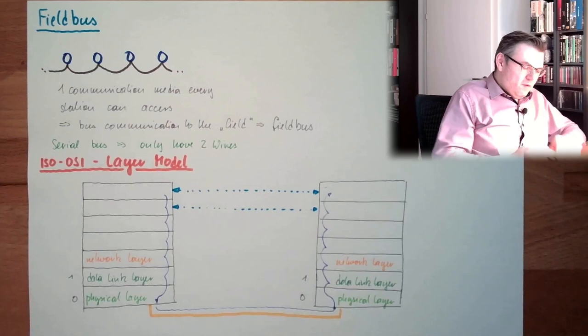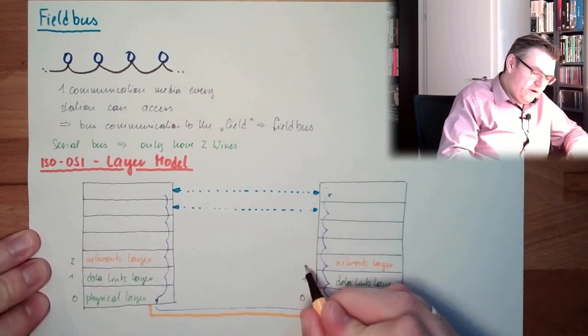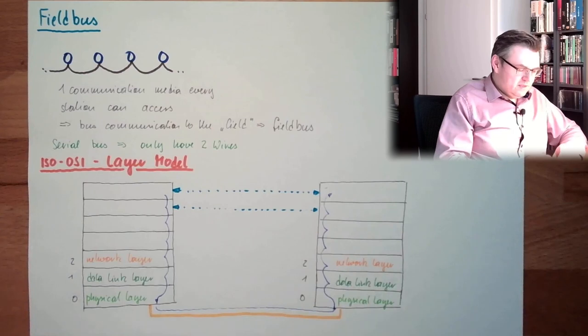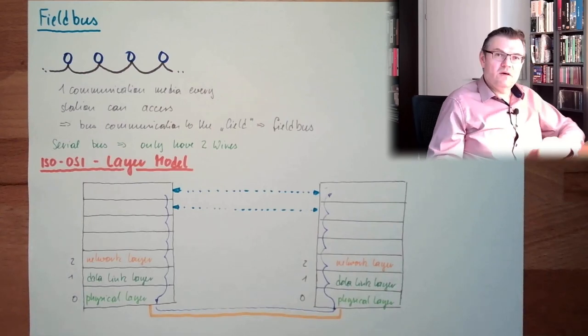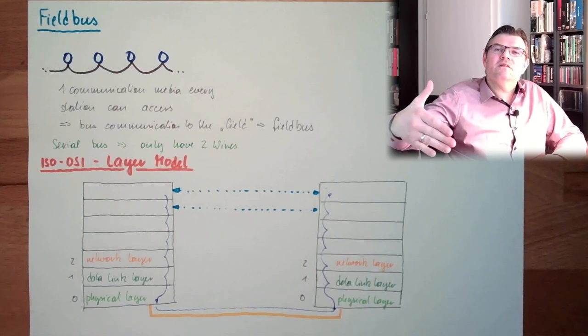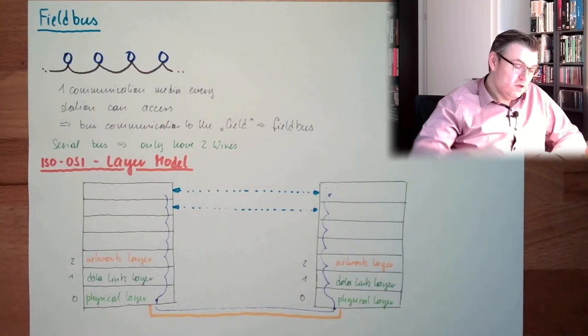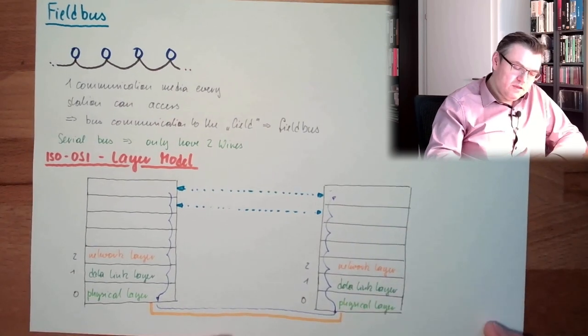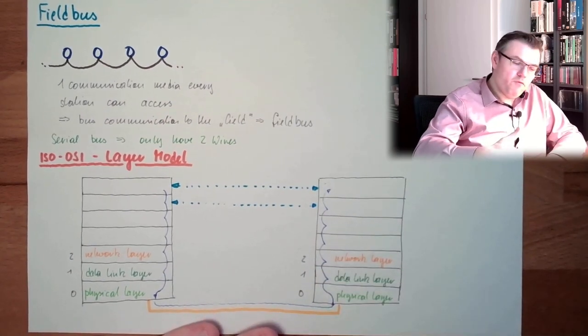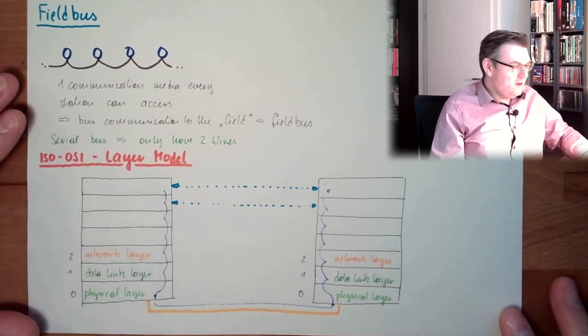Network layer. Up to now we only have one communication pattern. The network layer now takes care that we can pass several stations in between, that we can build a whole network. So we can send it to here, and then this one is sending further. So we can do several hops in between.